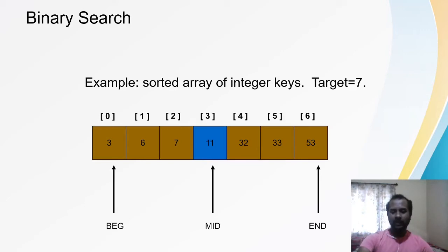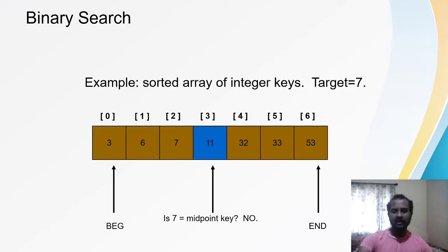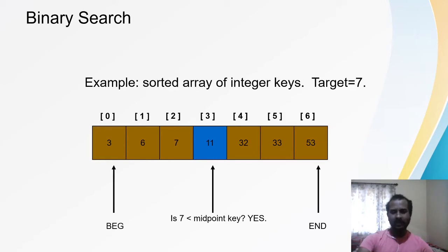Now I compare data[mid] with the target. Is data[3], which is 11, equal to 7? No, it is not equal. Then I check whether 7 is greater or lesser than the mid element. The mid element is 11, and 7 is lesser than 11.